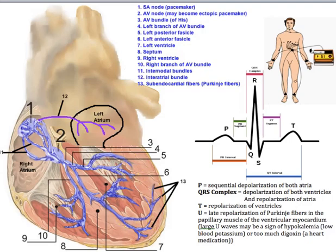The impulse then spreads to the AV node (number two), which acts somewhat like a yield traffic sign — slowing the impulse down but not bringing it to a complete stop. The AV node is a critical yield point in the conduction system. Without this critical delay, the atria and ventricles would contract at the same time. This delay ensures the atria can contract and empty their contents before the ventricles contract, and it represents much of the PR segment on the ECG.